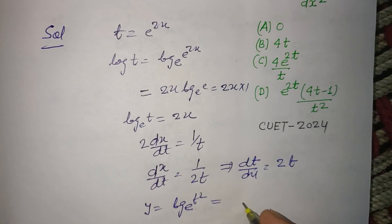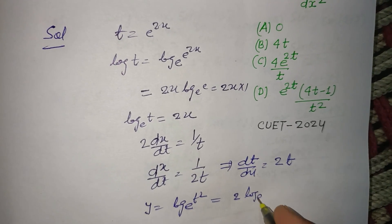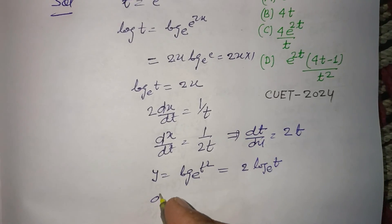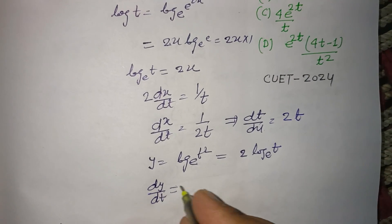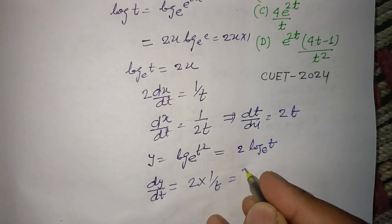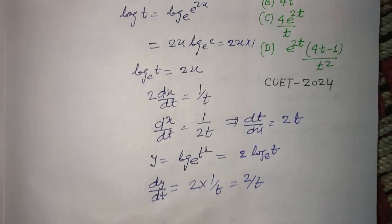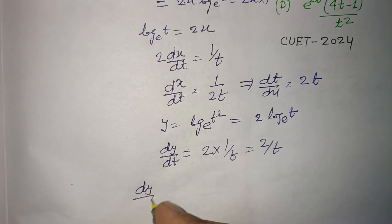base e of t squared. So this will be 2 log base e of t. Now differentiating with respect to t, dy by dt: differentiation of 2 log t is 1 upon t, so this is 2 upon t. Now dy